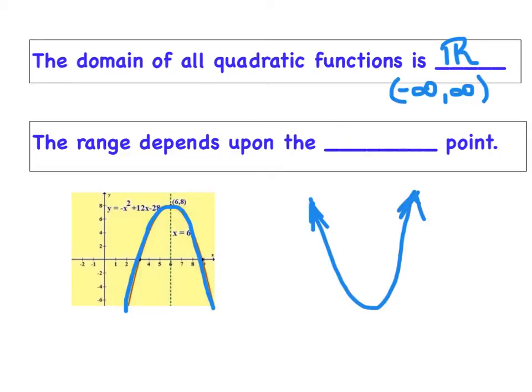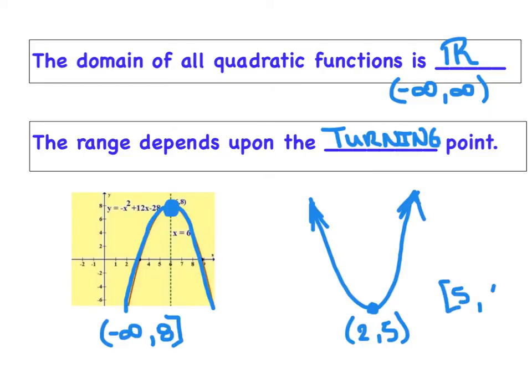The range, however, is going to depend on the turning point. So every time we talk about range, we want to make sure we first know where the turning point is. For instance, this one has a y max of 8, so I would say the range is from negative infinity to positive 8. If this turning point was 2 comma 5, the y min is 5, and so I'd say the range is going to be from 5 up to infinity.